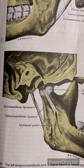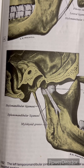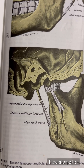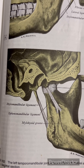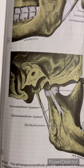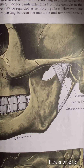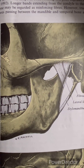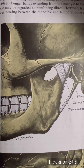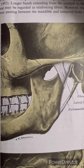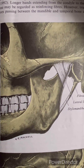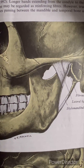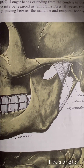The forensic significance is that in homicidal cases where skeletal remains are available, the mandible is used for determination of gender as well as age of the victim. This concludes our discussion on the mandible. In the next video, we will be discussing the temporomandibular joint. Thank you for watching. Don't forget to subscribe and share.